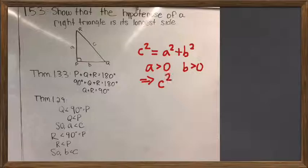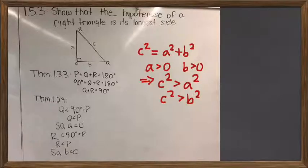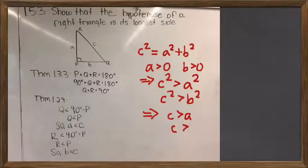And C squared is strictly bigger than B squared. And then taking the square root, which is a monotone function, we would conclude that C is greater than A and C is greater than B. So this would be the Pythagorean theorem proof of this.